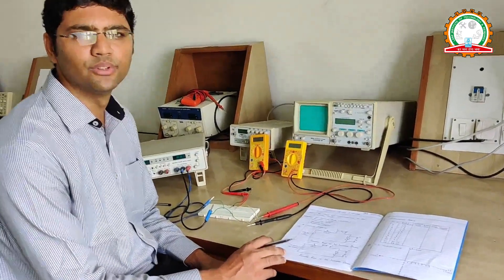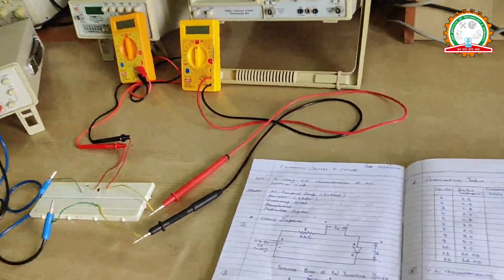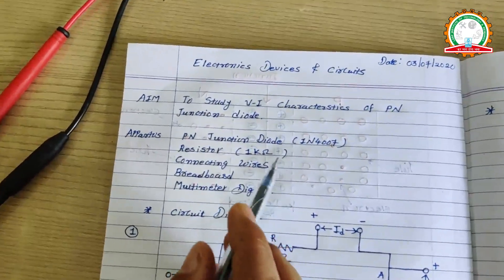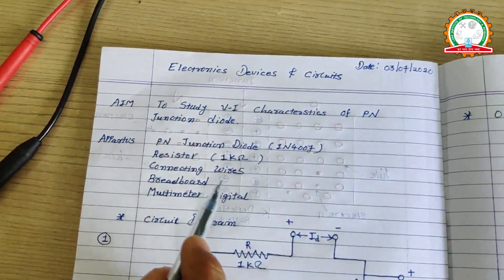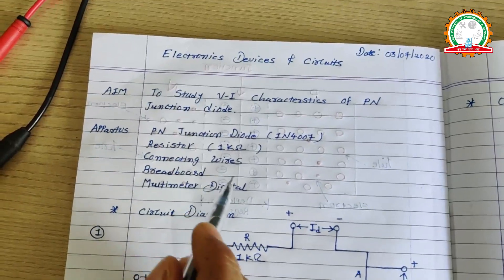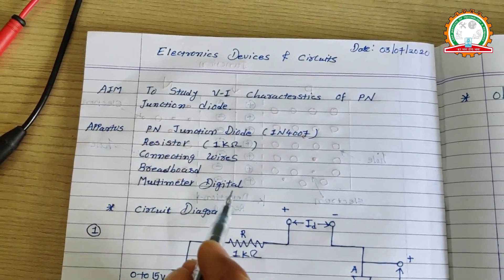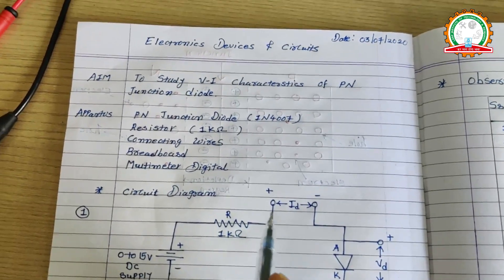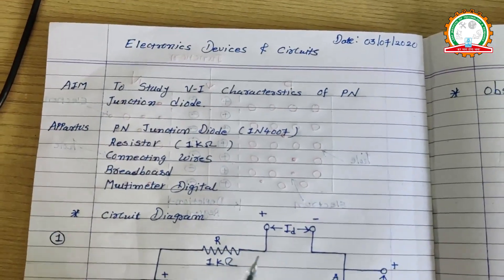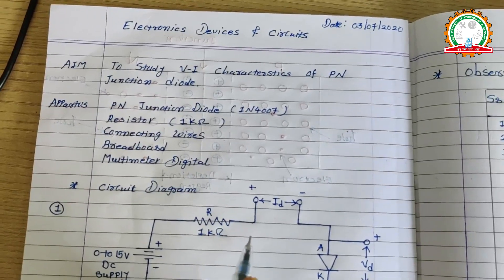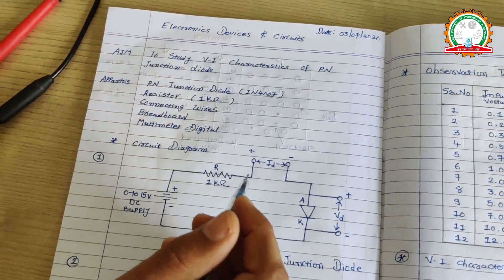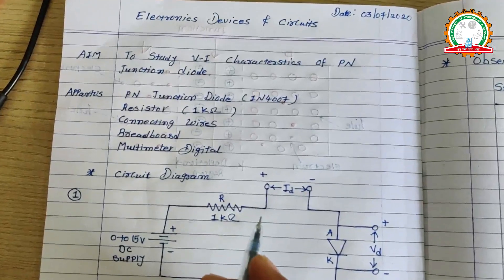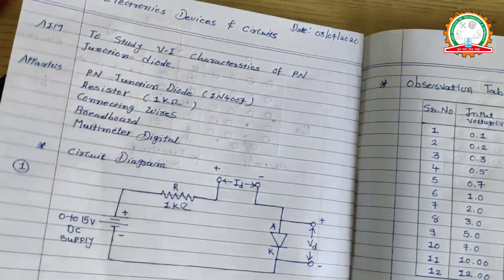Dear students, as we know that the P-N junction diode has so many applications in the real world. The P-N junction diode is used in rectifier circuits, clipper circuits, clamper circuits, voltage multiplier circuits, and so on. To design such applications of P-N junction diode, we need a basic knowledge of the P-N junction diode.